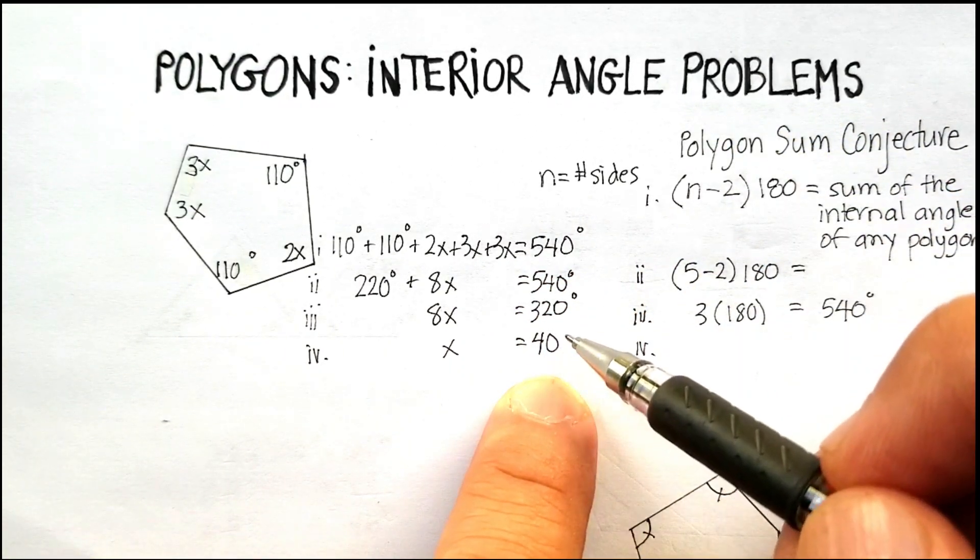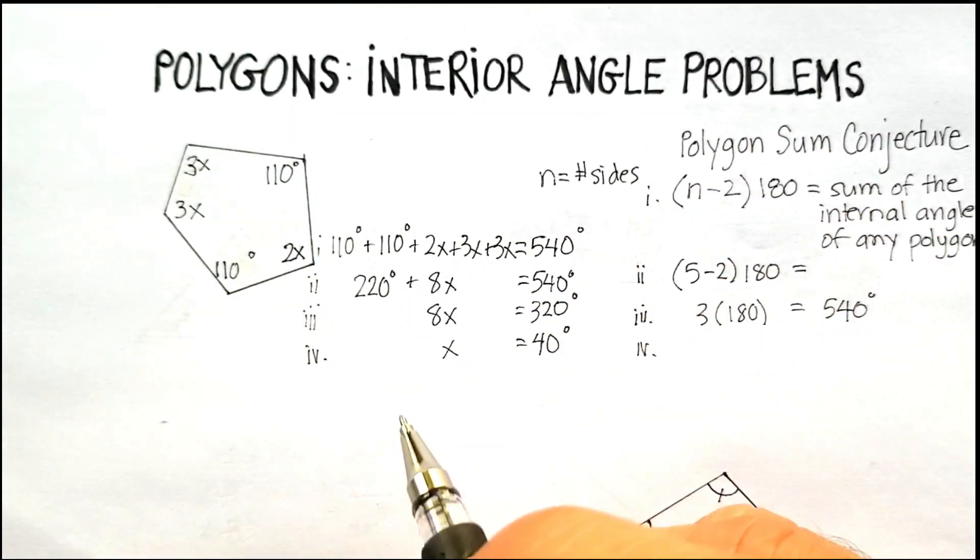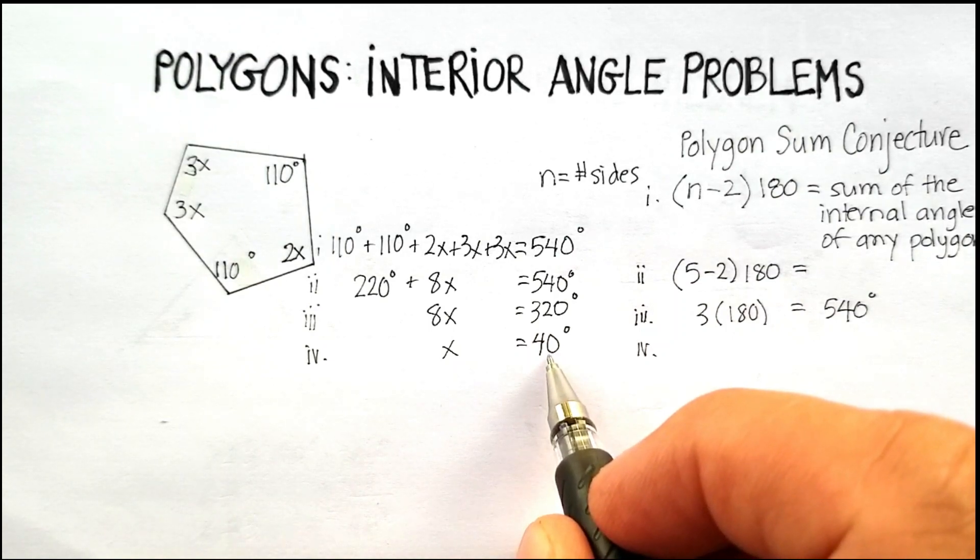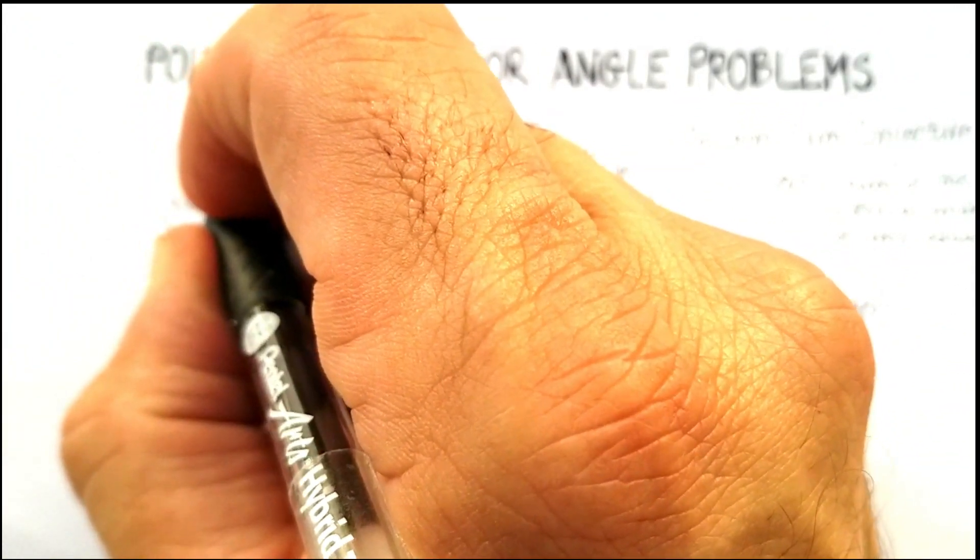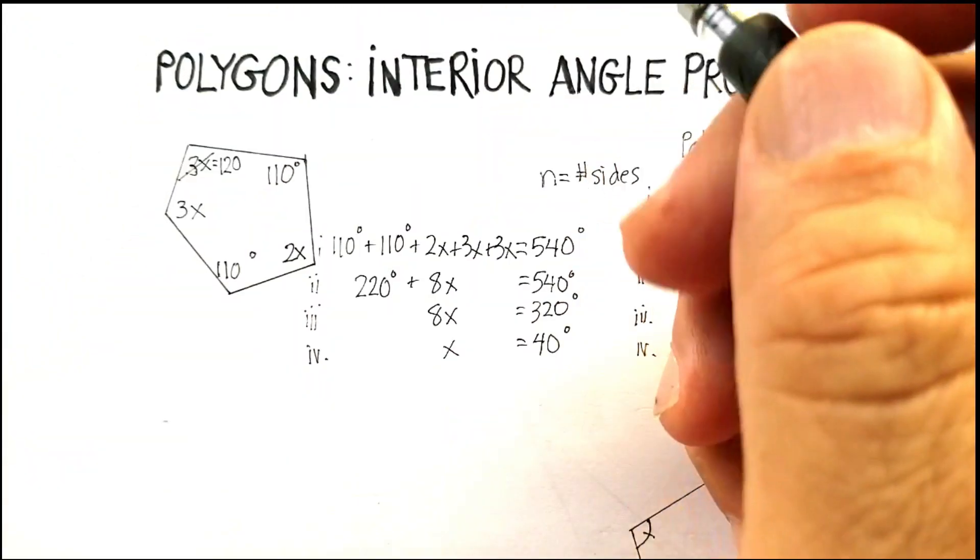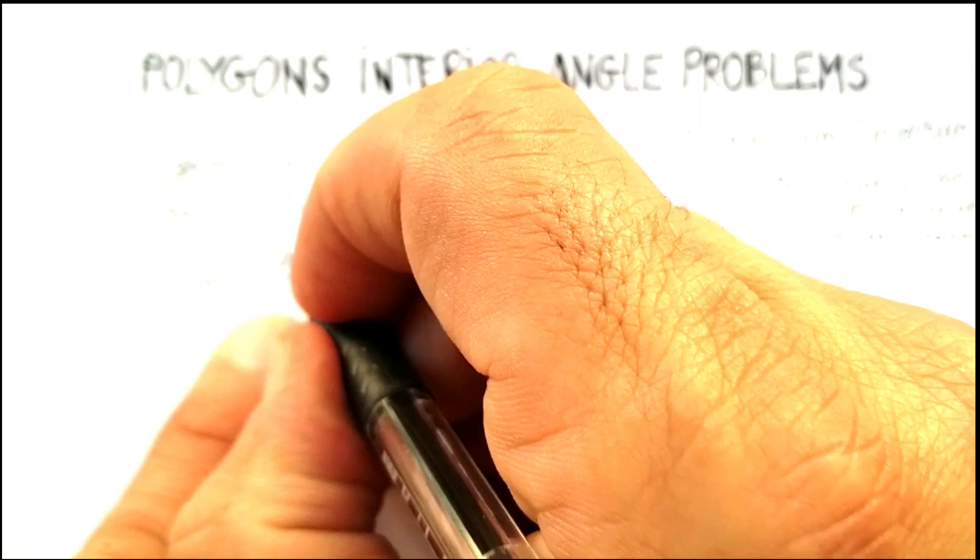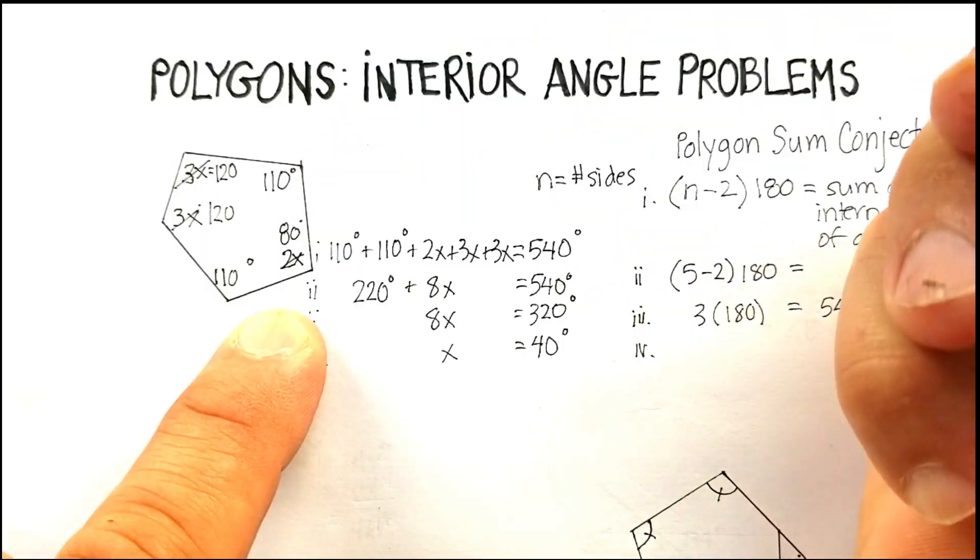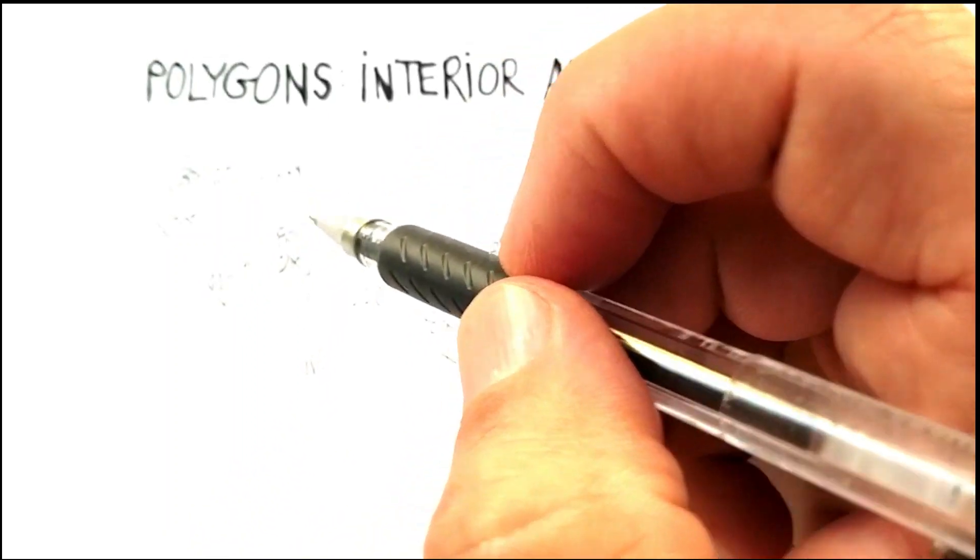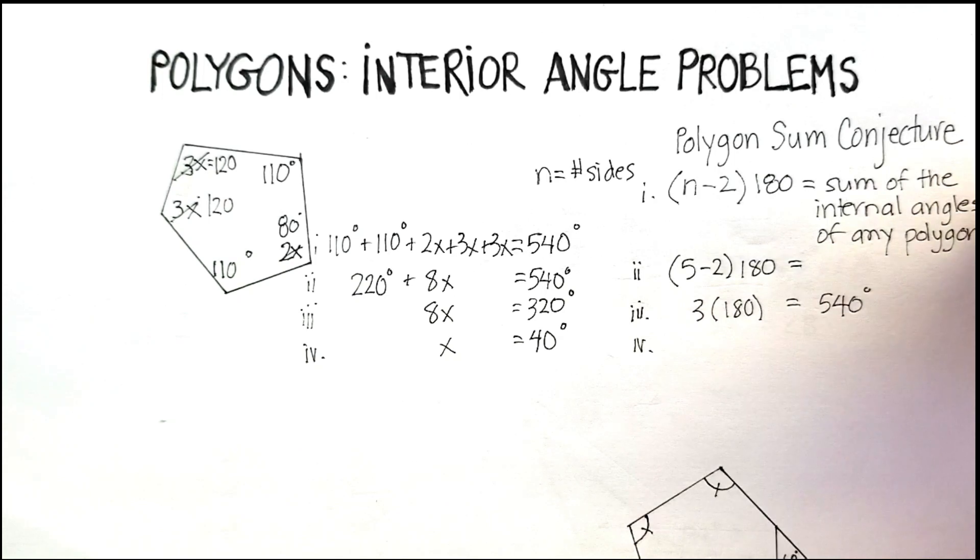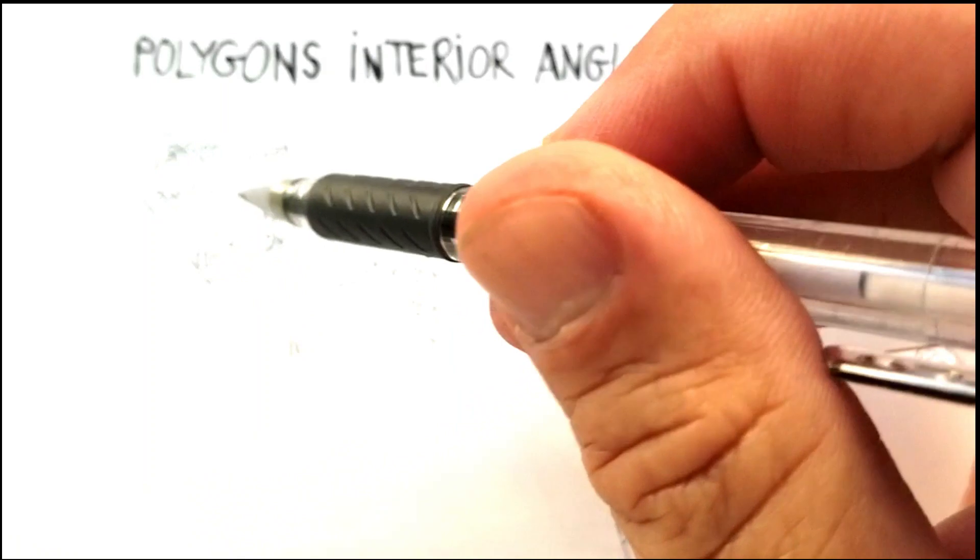Then what I do is I go ahead and take 40 degrees and plug it back into each one of these. Let's just see if it actually works. 3 times 40 gives me 120 degrees for that one, 120 degrees for that one, and 2 times 40 gives me 80 degrees for that one. So 120 plus 120 plus 110 plus 110 plus 80 gives me 540 degrees. That's how you use the polygon sum conjecture to help you figure out the number of internal degrees.